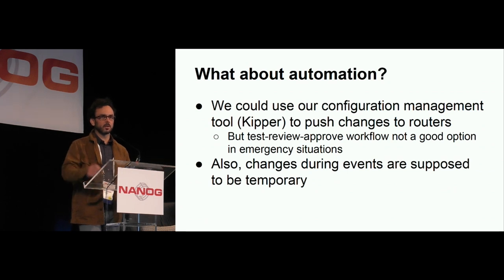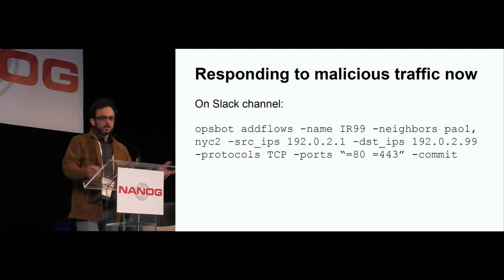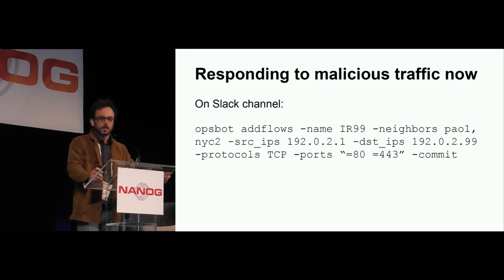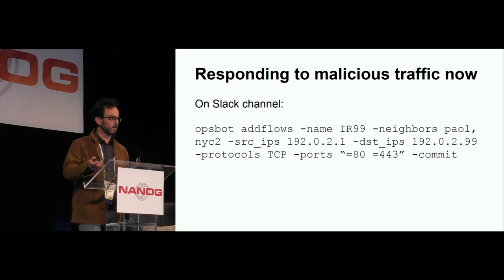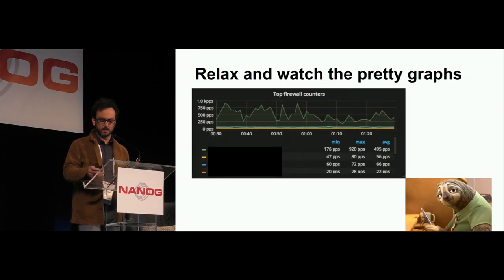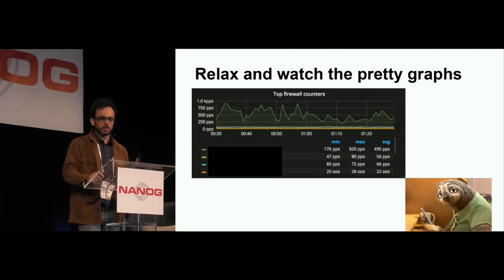You could say just use templates and generate the configs and push them with Ansible, but still that's not the fastest way. Anyway, the way we deal with an attack when we need to filter something somewhere is now through a chatbot. We use Slack, so someone on the NOC channel is aware of what's going on. They know what they need to filter and they type some things in the Slack channel. It's a lot shorter and more concise than what you'd have to do at the CLI, and you only do it once. Everyone is watching what you're doing because you're doing it on the Slack channel. You type that, commit, and sit back and relax, and watch your counter graphs to see how much you are filtering. And that happens very, very fast — even the sloth from Zootopia would do it fast enough.